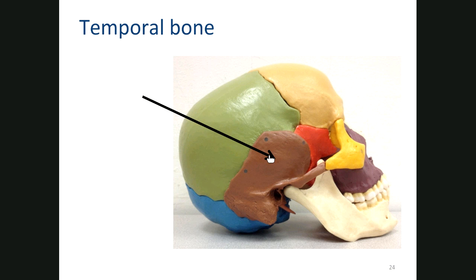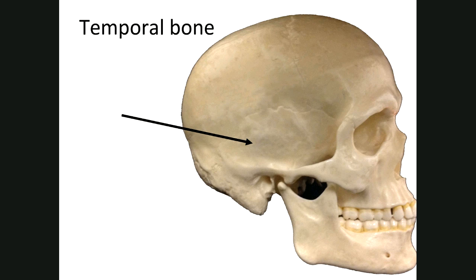For the temporal bone, think of where your ear is — the temporal bone sits just underneath your ear. There's your ear canal right there.